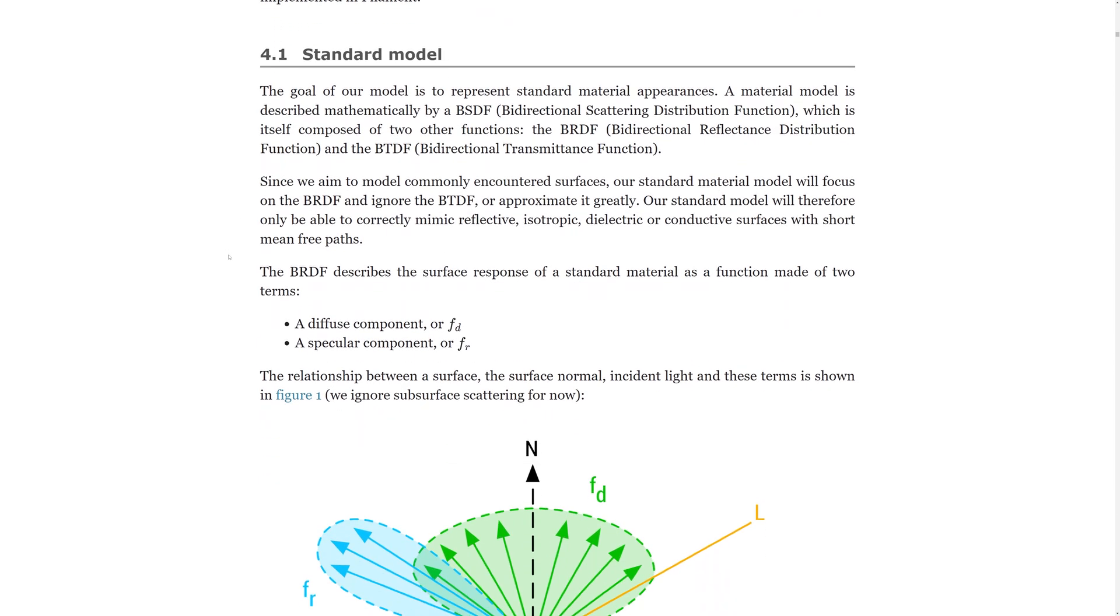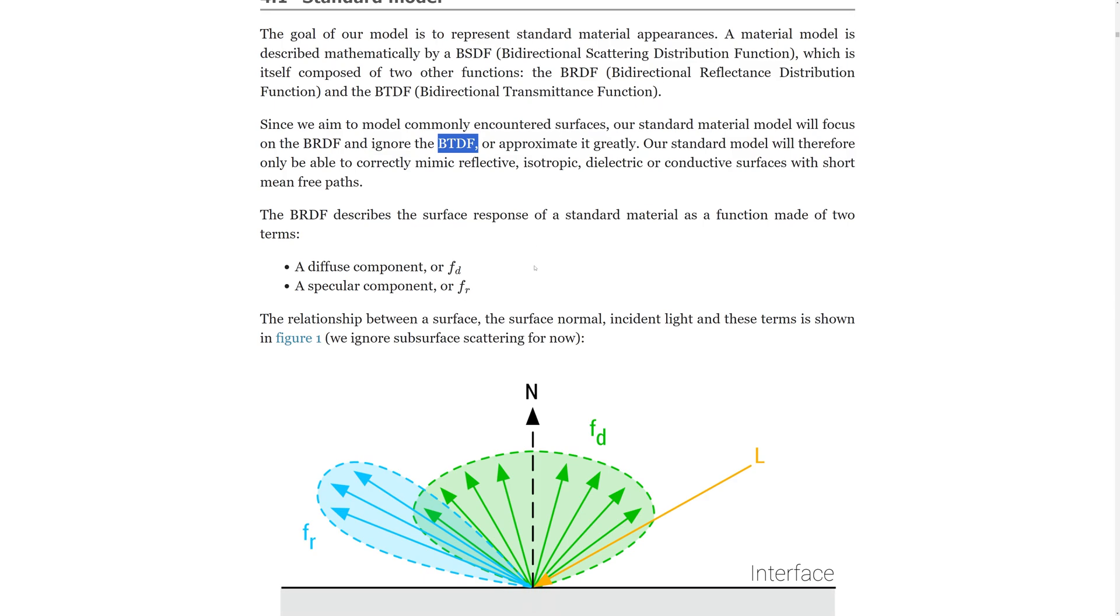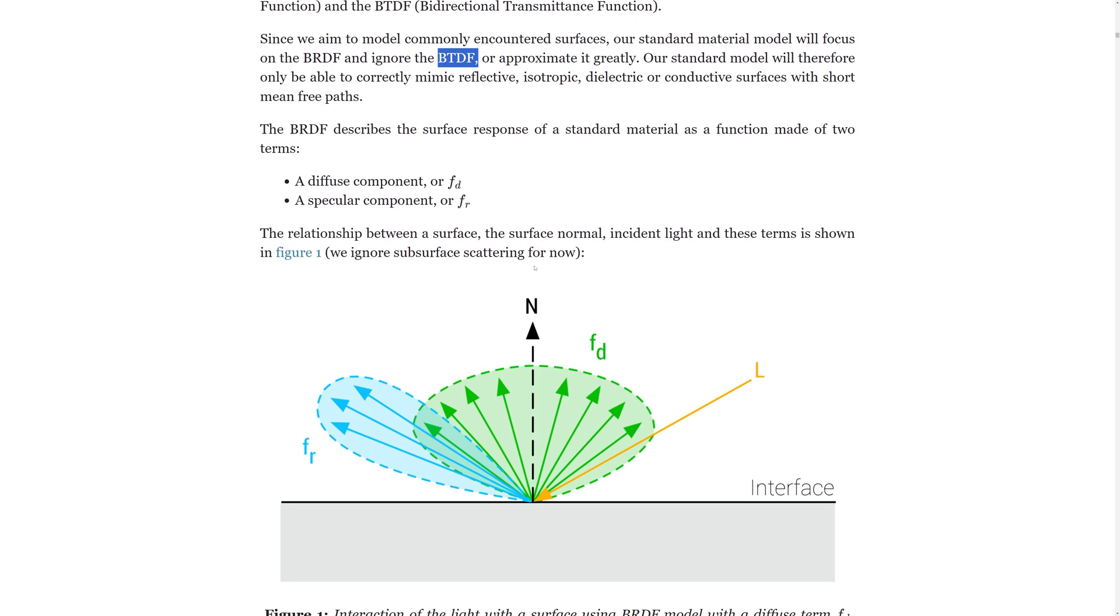Here we look at a function that's called the bi-directional reflectance distribution function BRDF for short which as the name suggests describes how light is reflected off from a surface. There is also the transmittance function which is used for calculating how light is transmitted through translucent and transparent objects. However in general this part is approximated since it can be more expensive to implement it directly.